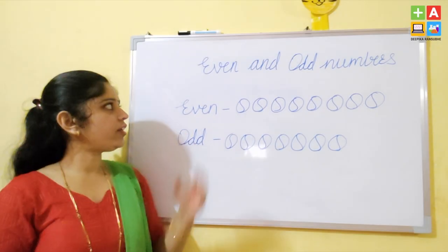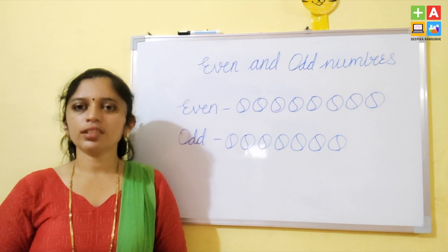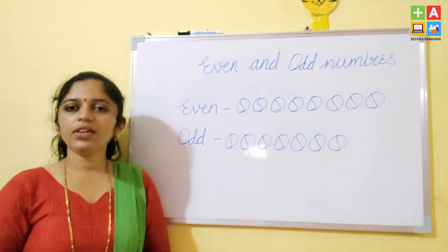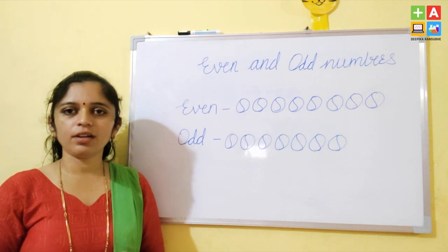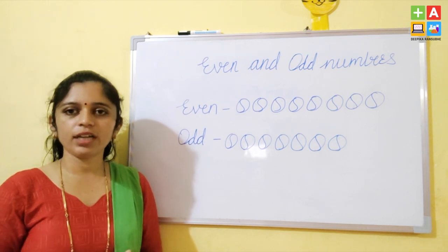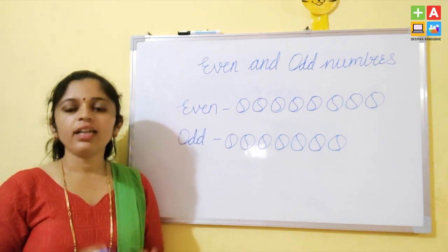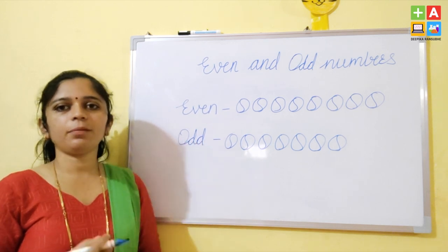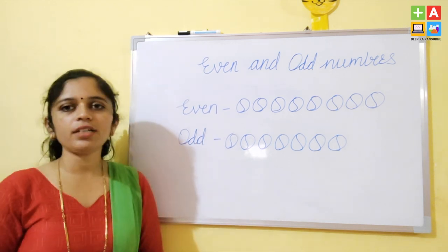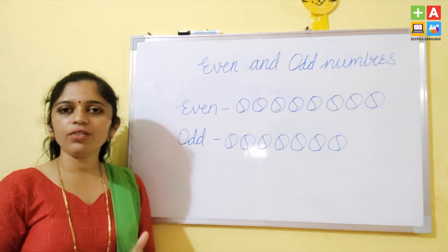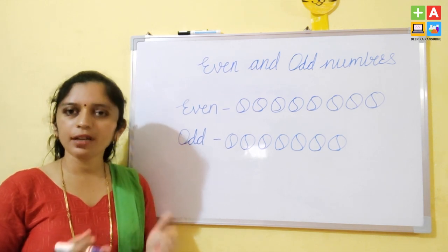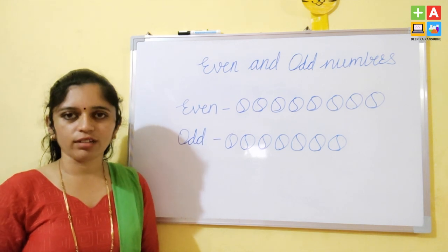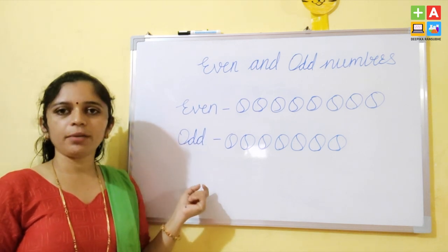Let's start with our topic: even and odd numbers. What do you mean by even numbers? Even numbers are numbers or objects which can be paired, and nothing is left over. That is an even number. What do you mean by odd numbers? Whenever we pair numbers or objects and something is left over, that is an odd number.